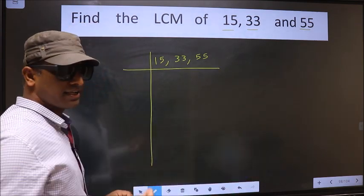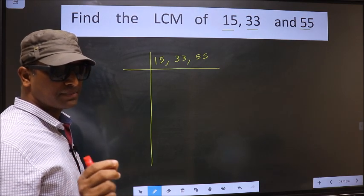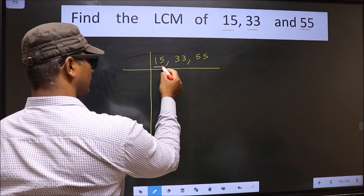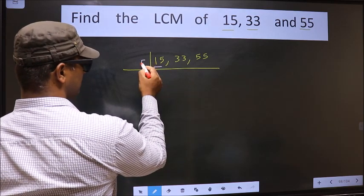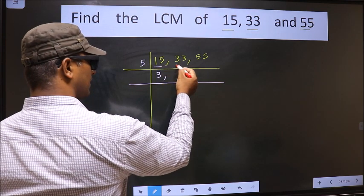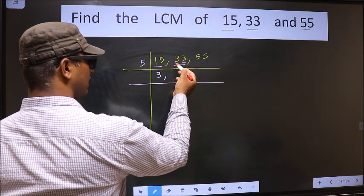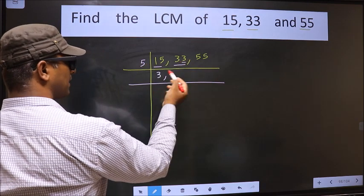Now, we should focus on the first number, 15. 15 is 5 times 3. The other number, 33 - here, the last digit is neither 0 nor 5, so this number is not divisible by 5.